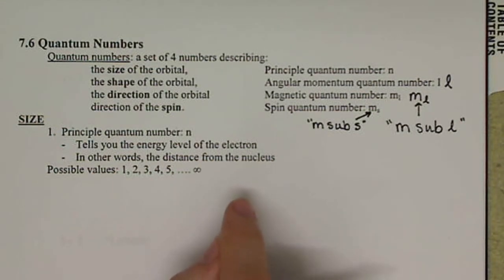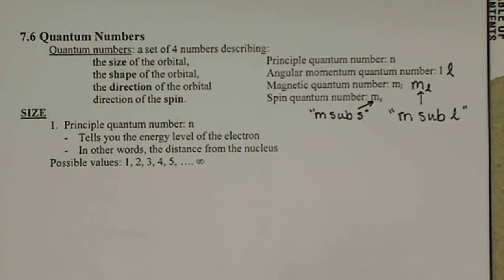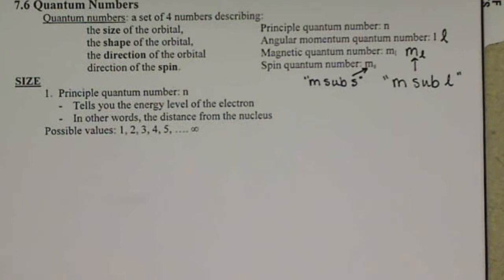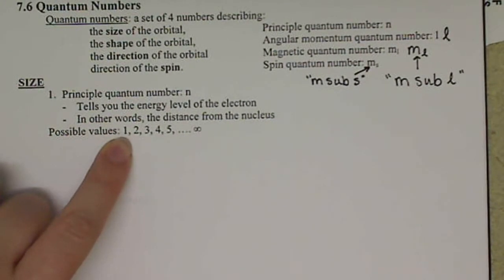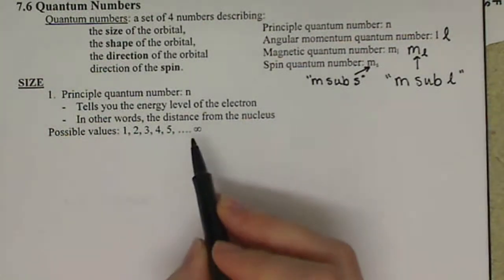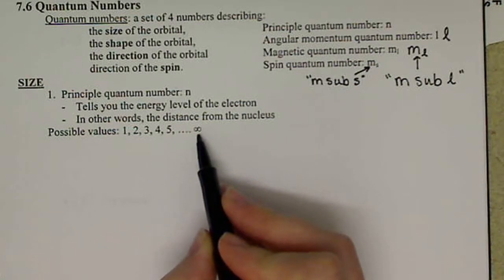So the further, the larger your n value is, the further away that electron is from the nucleus. Possible values are integers of one or greater, and they can go to infinity.